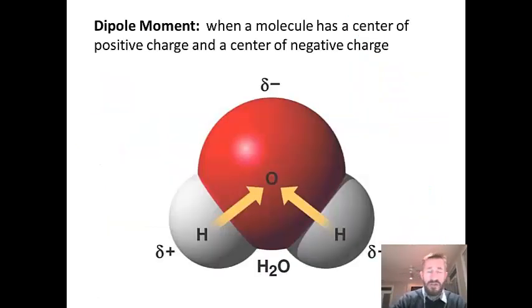Another term we want to define is the idea of dipole moment. When a molecule has a center of positive charge and a center of negative charge, we say it has a dipole moment. This is what we call a permanent dipole. It exists in this molecule all the time. The perfect example of that is water. Water dissolves ionic compounds, which have charges.